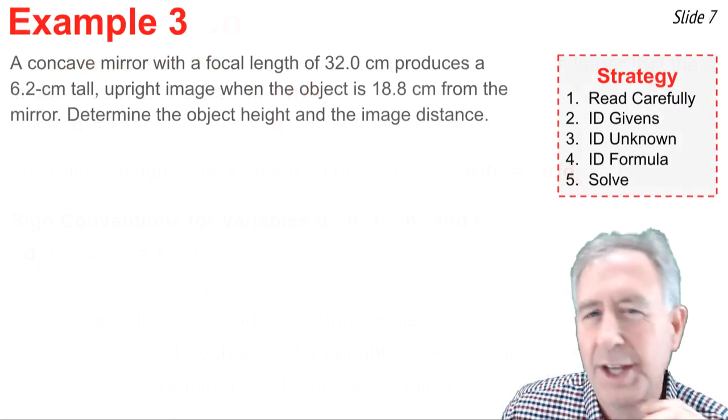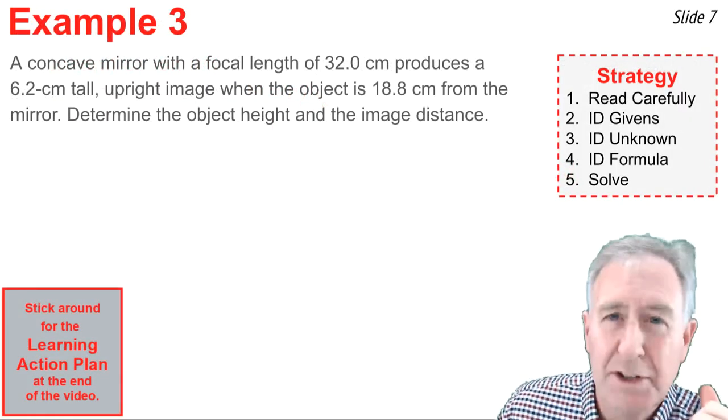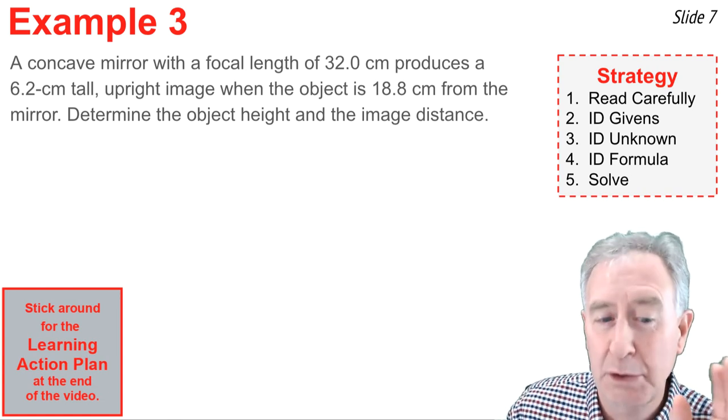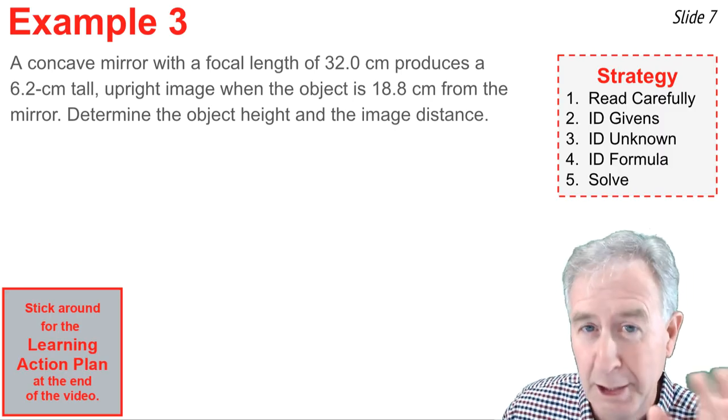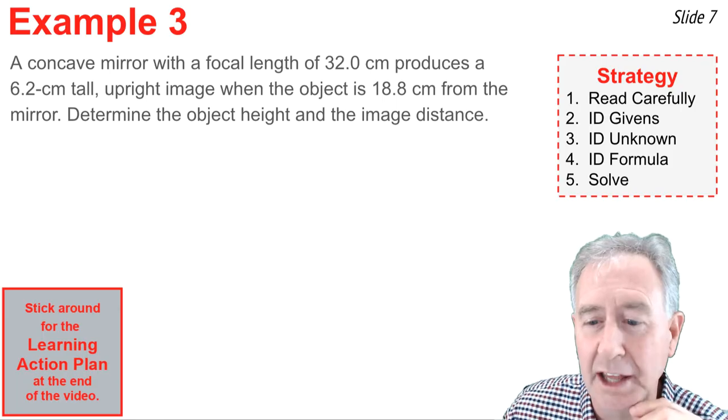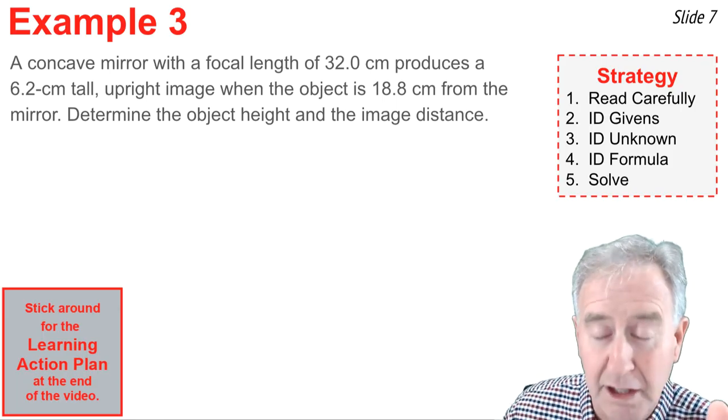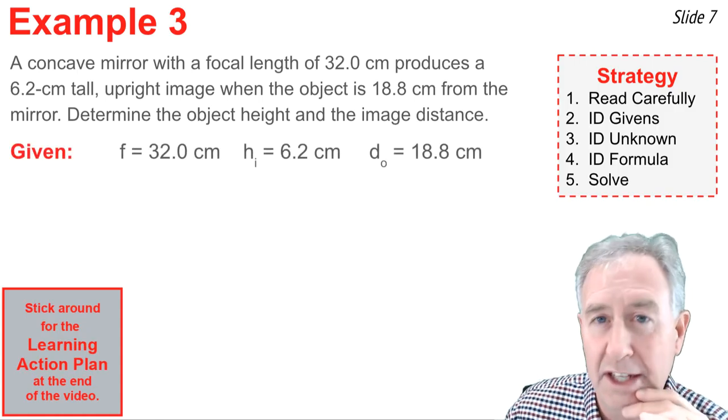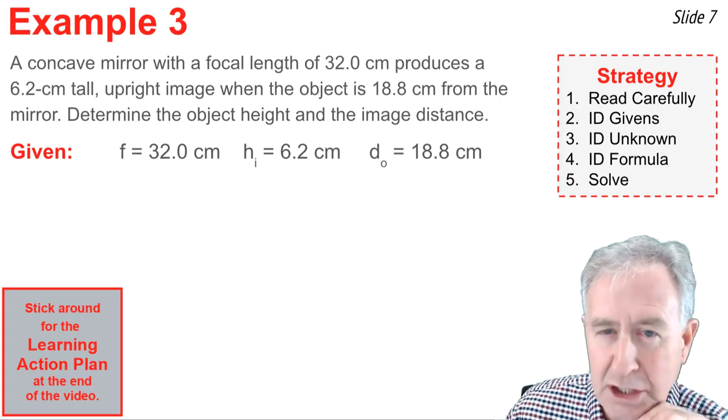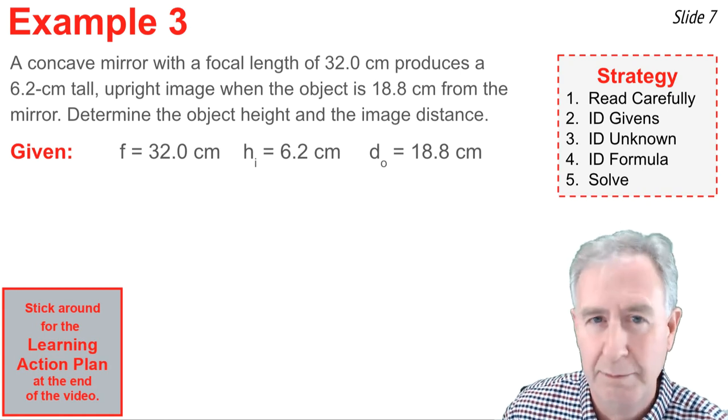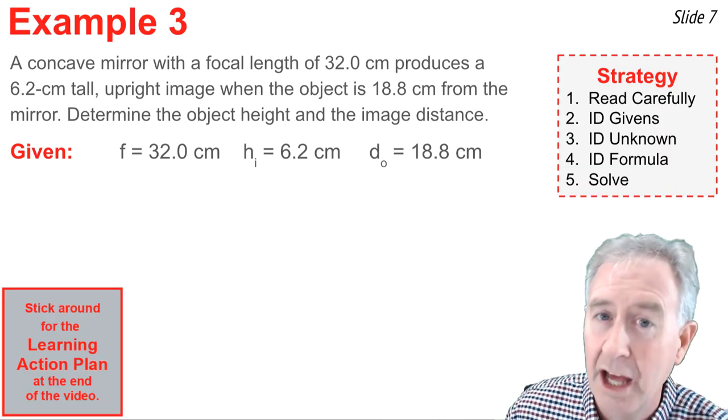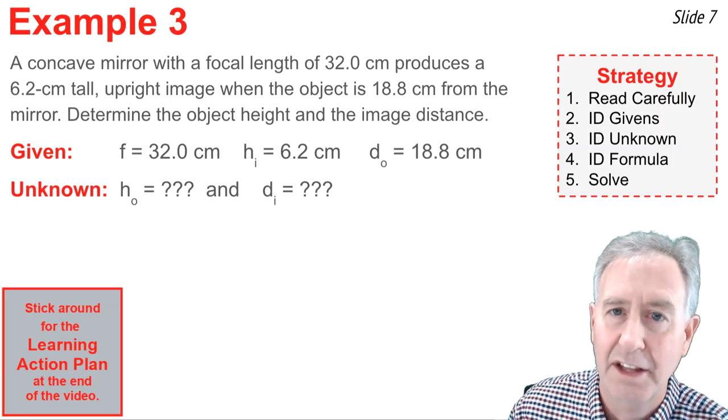Let's get started using this. Here's example three, and I'm going to use the problem solving strategy above to solve this, beginning with, read carefully. A concave mirror with a focal length of 32.0 centimeters produces a 6.2 centimeter tall upright image, upright image, when the object is 18.8 centimeters from the mirror. Determine two things, the object height and the image distance. So that's my first step. Read carefully. Second step, write down what is given. And so one thing that is given is f equals 32.0 centimeters for the focal length. That's positive. Height of the image is 6.2 centimeters. It's positive because it's an upright image. Those are positive image heights. And then finally, the object distances are always positive, and it's given here as 18.8 centimeters.